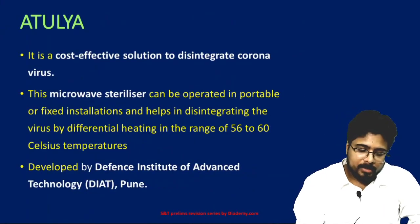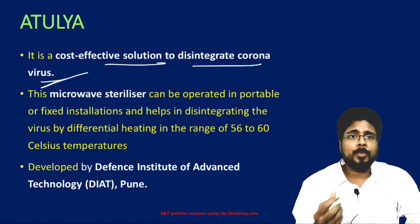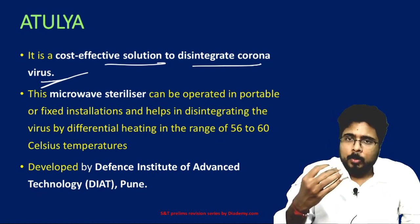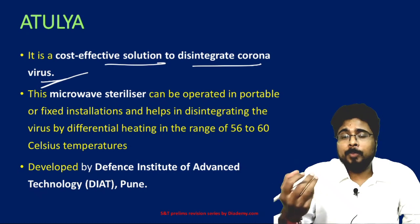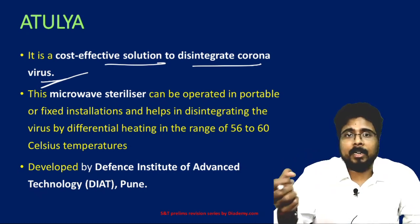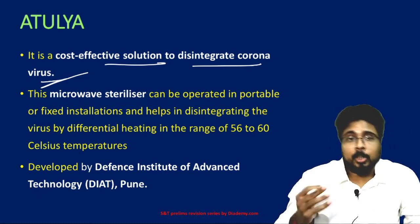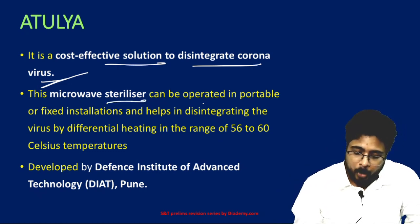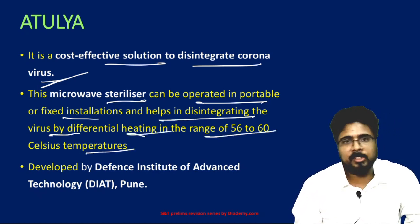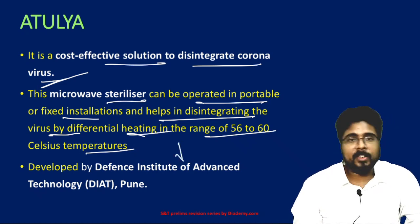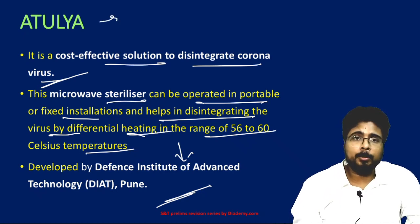Next, ATULYA. It is a cost-effective solution to disintegrate coronavirus. It is a microwave sterilizer that can be operated in portable or fixed installations, helping disintegrate the virus by differential heating in the range of 50 to 60 degrees Celsius temperature. It is used for disintegrating and sanitizing public places. ATULYA was developed by the Defense Institute of Advanced Technology (DIAT), Pune.